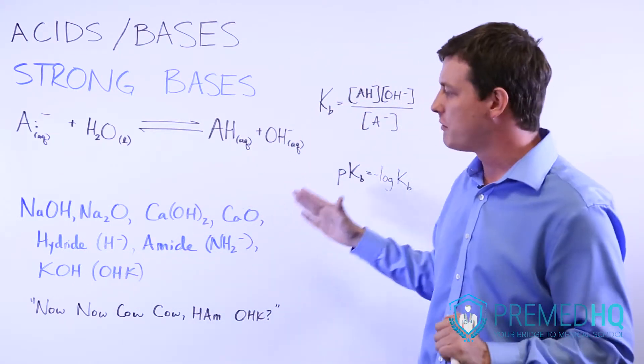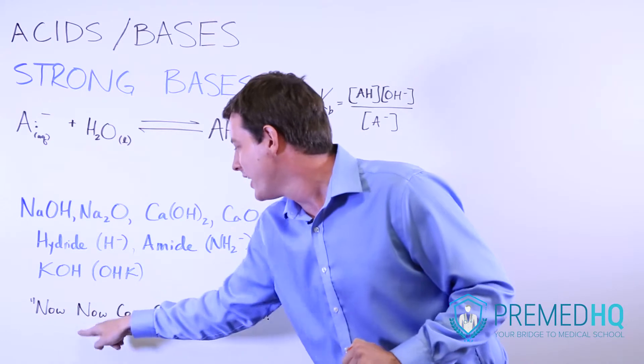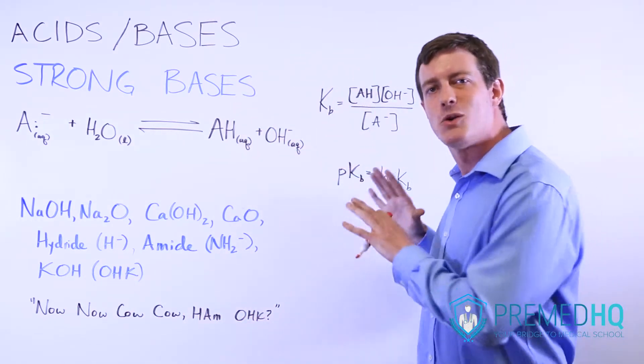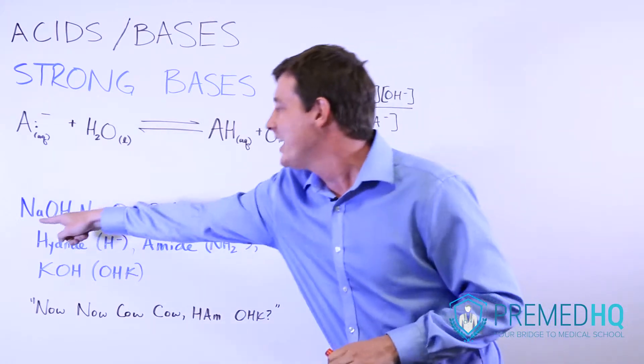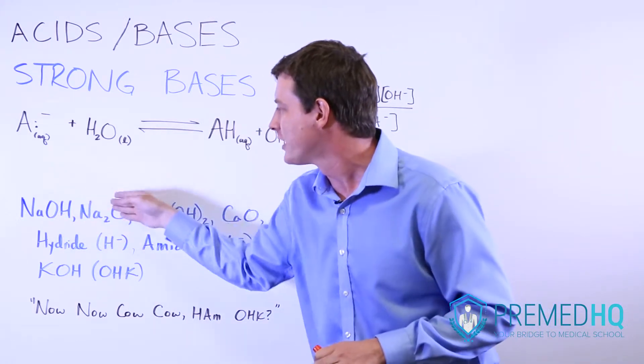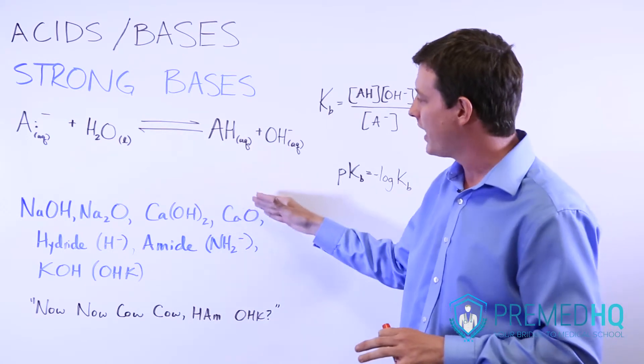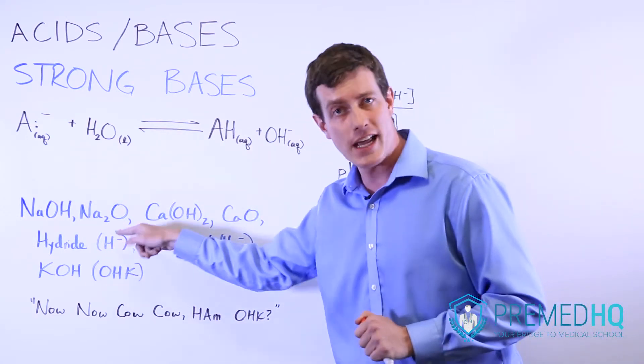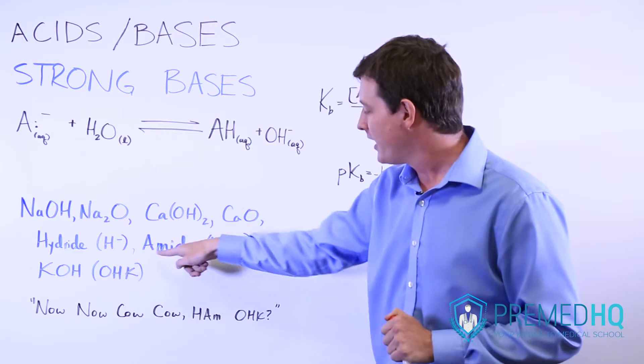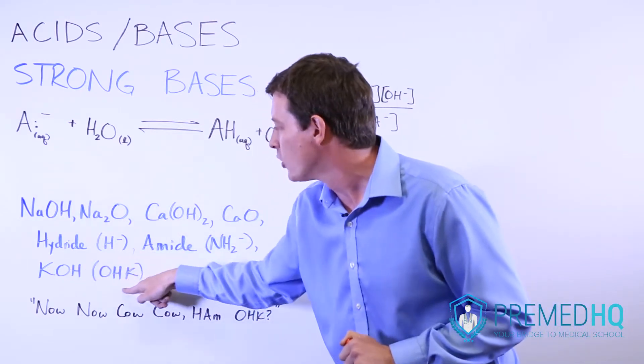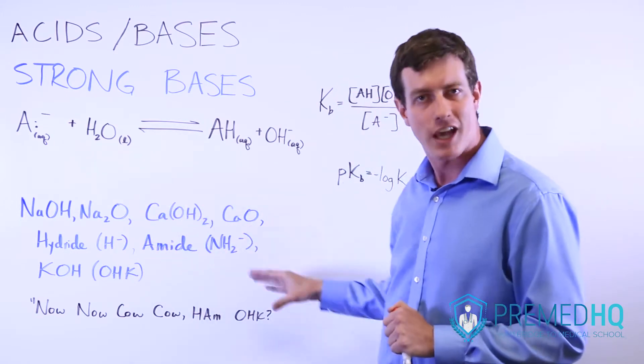And so the way to remember this is by remembering a sentence. Now, now, cow, cow, ham, OK. And so what we'll do is we'll go through this. NaOH and Na2O both look like the word now. CAOH and CAO look like cow. Hydride is simply an H or an H minus. Amide we use as the AM. And then KOH, we just reorganize, we rewrite this as OHK, which is an acceptable way of writing a salt like this.